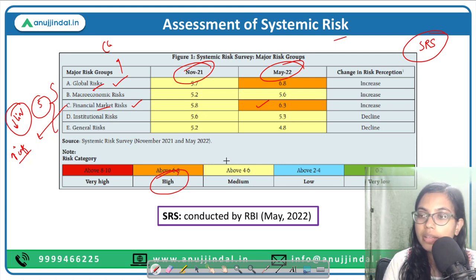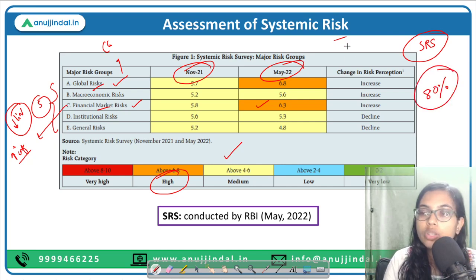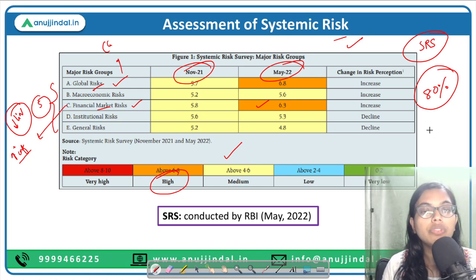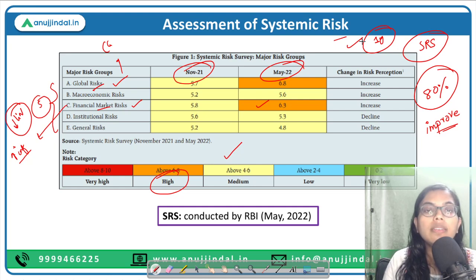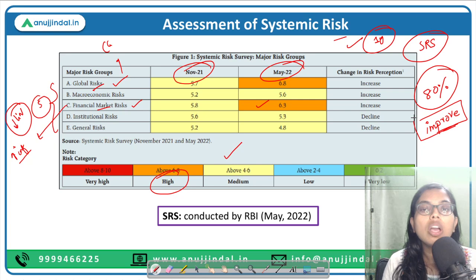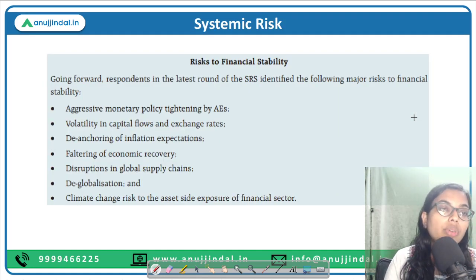According to this report, nearly 80 percent of respondents to this survey judged that the prospects of the Indian banking sector are likely to either improve or remain unchanged over the one-year horizon. So over this volatile one-year period, people feel according to this survey that Indian banking prospects can either improve or stay in the same position.